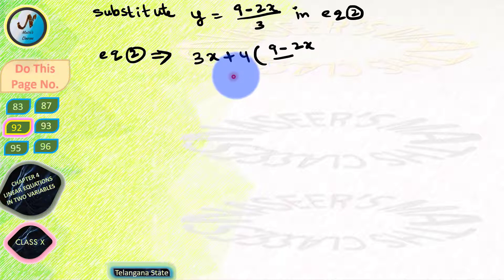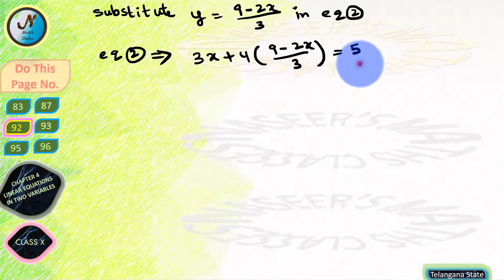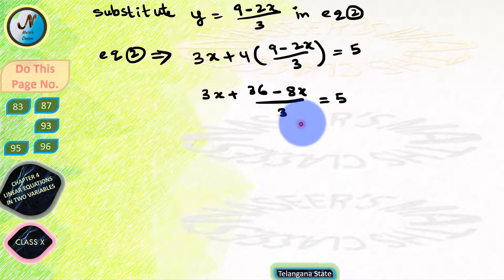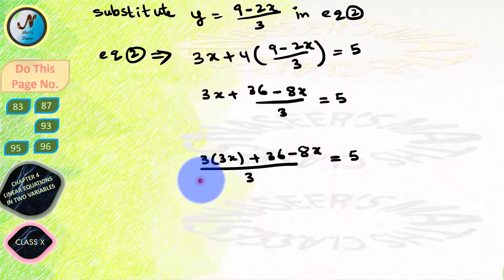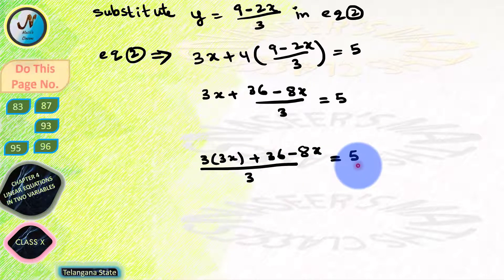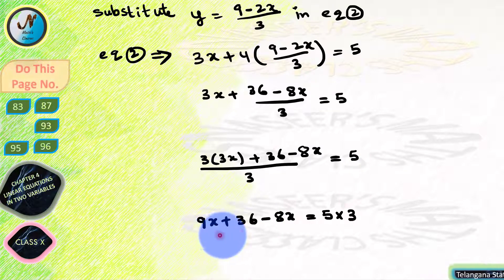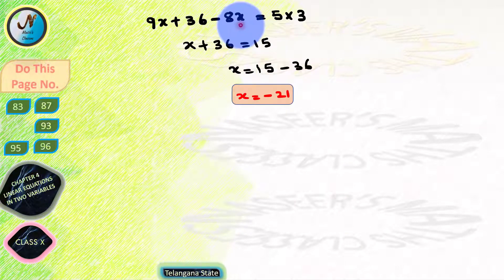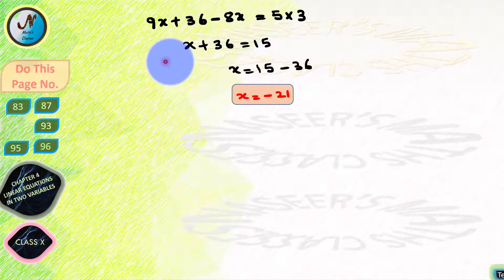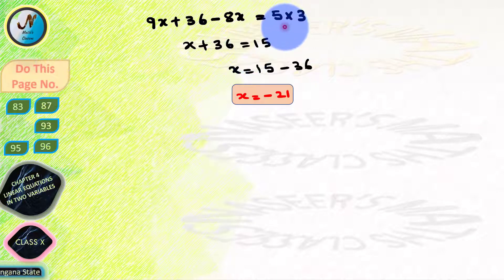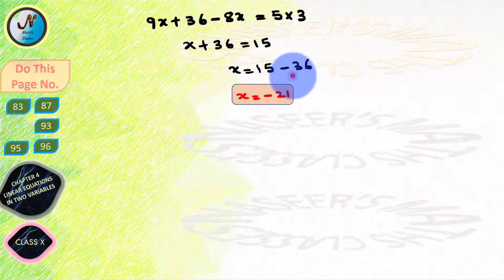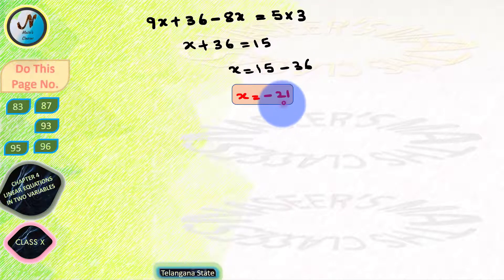Substituting y equals (9 minus 2x) by 3 in equation 2: 3x plus 4 into (9 minus 2x) by 3 equals 5. By the distributive law, 4 times 9 equals 36 and 4 times 2x equals 8x, giving 3x plus (36 minus 8x) by 3 equals 5. Taking LCM 3: (9x plus 36 minus 8x) by 3 equals 5. Transposing 3 to the RHS: 9x plus 36 minus 8x equals 15. Since 9x and 8x are similar terms, x plus 36 equals 15.